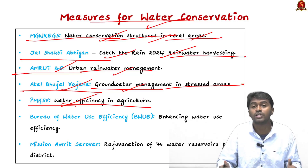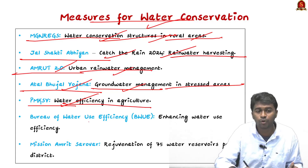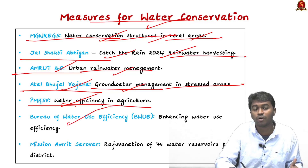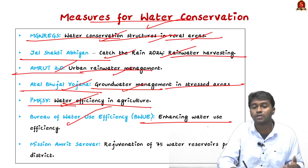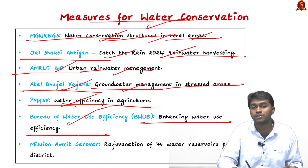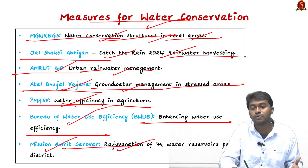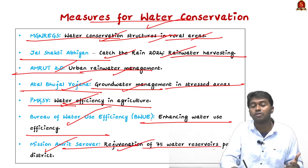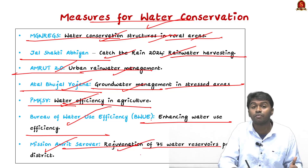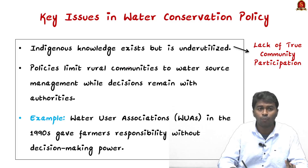The Bureau of Water Use Efficiency focuses on enhancing water use efficiency across all aspects of human activities. Mission Amrit Sarovar focuses on the regeneration of 75 water reservoirs per district.